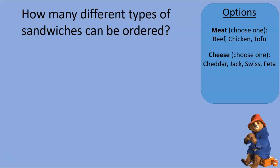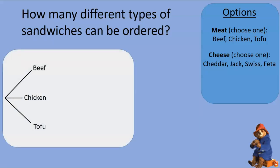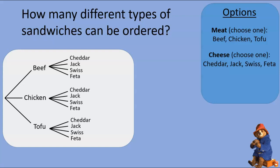We can answer this by thinking about a counting tree. We have three options for meat. Suppose you pick beef — then you still have four options for cheese, and the same would be true if you had picked tofu or chicken. Every path through this tree leads to a specific sandwich, and different endpoints always correspond to different sandwiches.